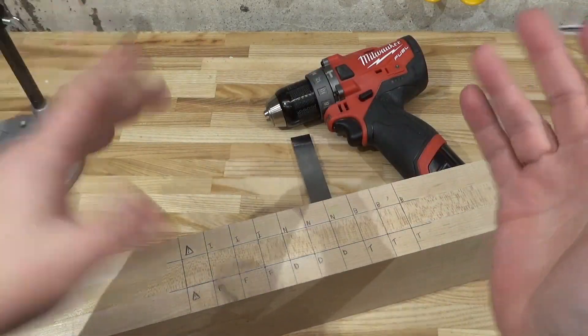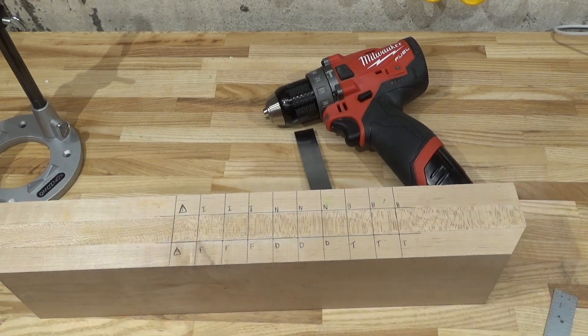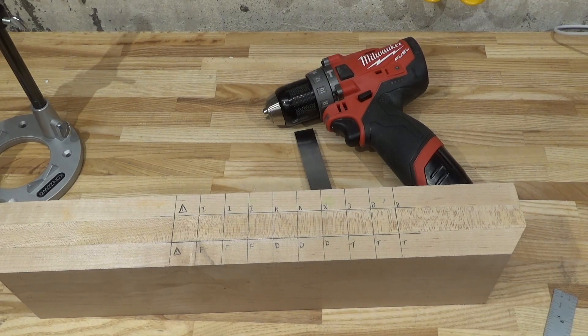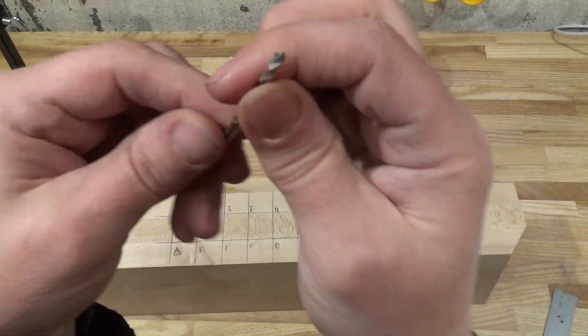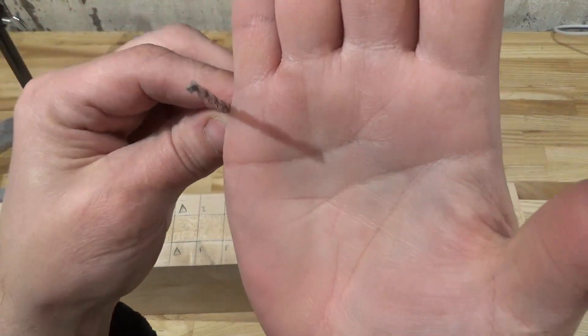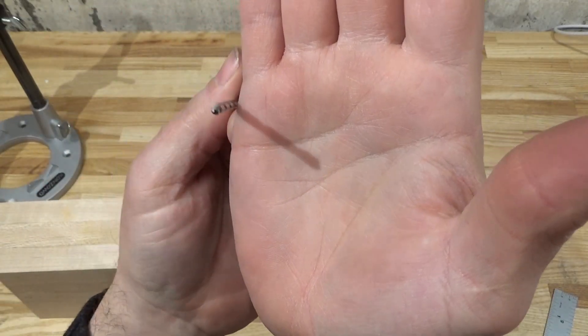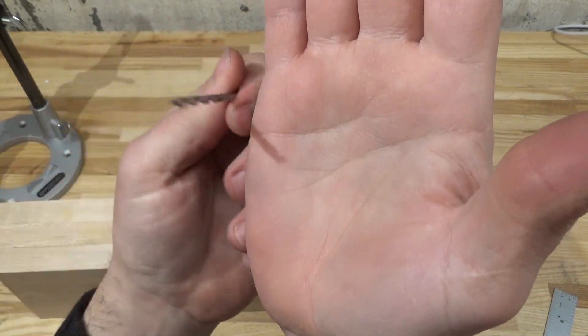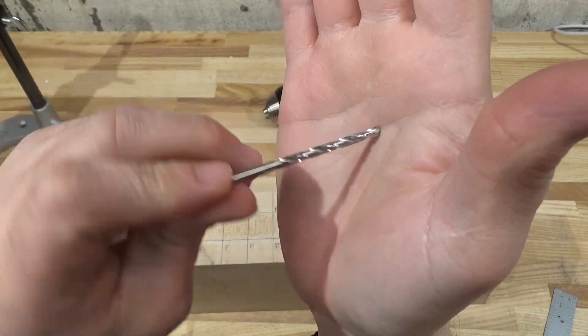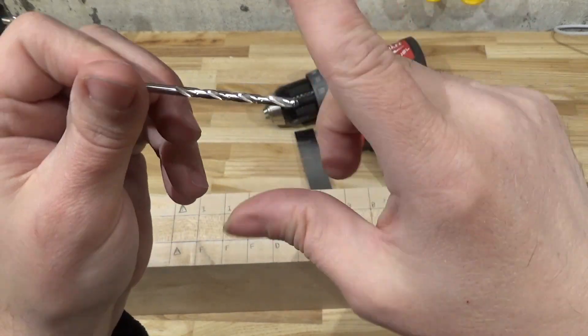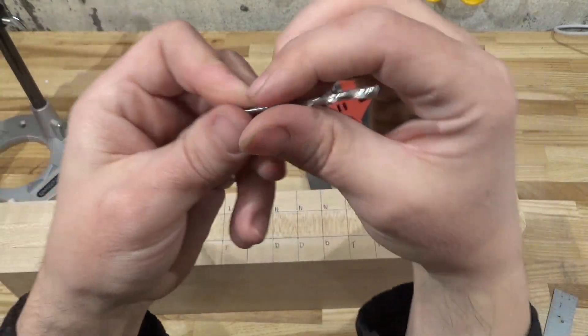Let's see the contenders. First up, I have a standard twist bit. It is one-eighth, jobber's length, high-speed steel, Triumph, made in the United States, 118 degrees.